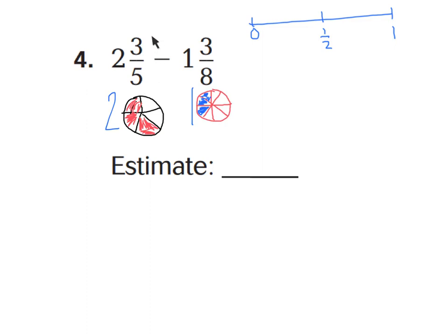If I had a fraction cut into five parts and three are shaded in to show three-fifths, I can imagine where one-half falls. Do you see how three-fifths is really close to one-half? It's not really close to zero, and it's not really close to one-whole. So I would estimate two and three-fifths to be two and one-half.